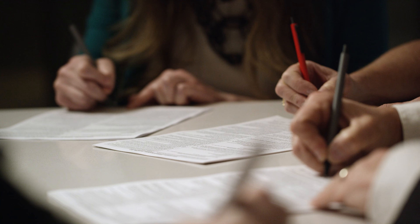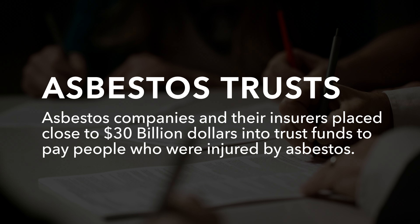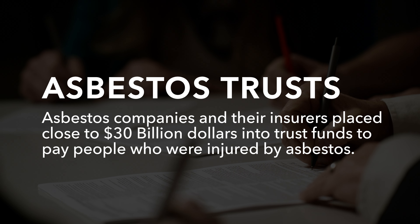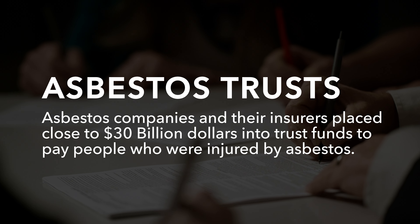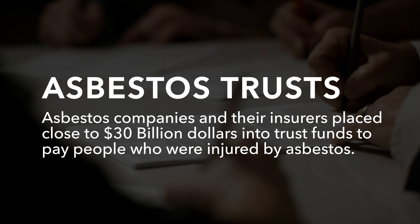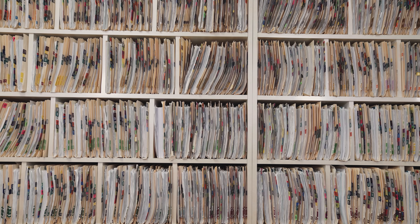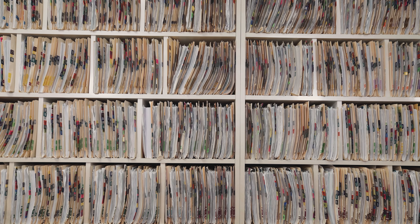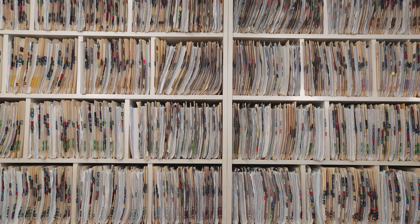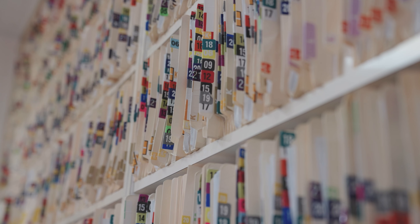The primary focus of our law firm is obtaining compensation from the various asbestos trusts that were set up by the courts to compensate people who developed an asbestos-related disease. Right now, there are about 50 trusts that are accepting and paying claims. Obtaining settlements from the asbestos trusts does not require filing a lawsuit, going to court, or being questioned by a hostile attorney. The majority of our clients receive settlements from multiple trusts, often dozens.